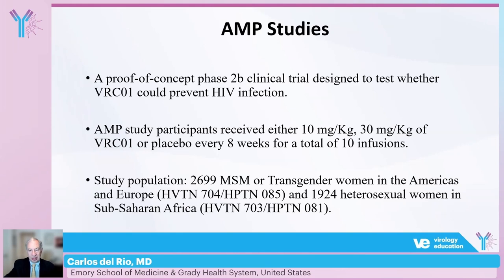This was a phase 2b clinical trial in which participants received either 10 mg/kg or 30 mg/kg of VRC01, or placebo — three arms total — administered intravenously every eight weeks for a total of 10 infusions. The study had two populations: HPTN 085 enrolled 2,699 men who have sex with men and transgender women in the Americas and Europe, while HPTN 081 enrolled 1,924 heterosexual women in sub-Saharan Africa.